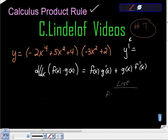So the first function f(x) is equal to negative 2x to the fourth plus 5x squared plus 4. We need its derivative, and its derivative is negative 8x to the third plus 10x.